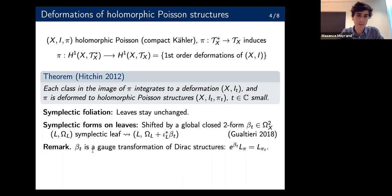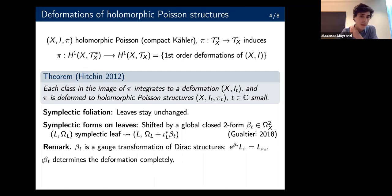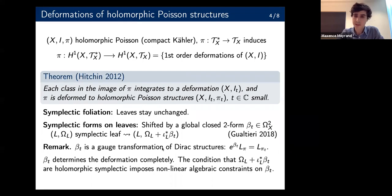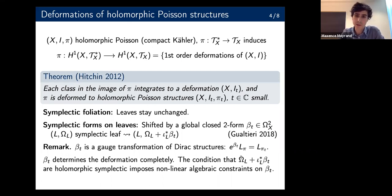This form beta determines the deformation completely, but not every family of closed two-forms gives an actual deformation of holomorphic Poisson structures. For instance, the fact that the two-forms have to be holomorphic symplectic imposes some nonlinear algebraic constraints on the family. I will explain more precisely what those constraints are in later slides, because we will need to solve them in a particular way to get the hyperkähler structure.